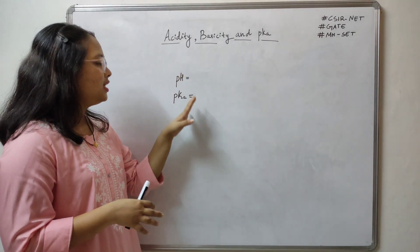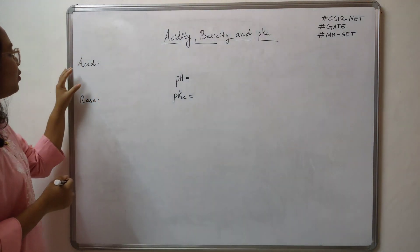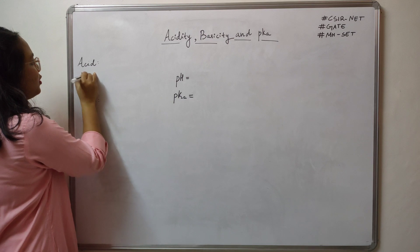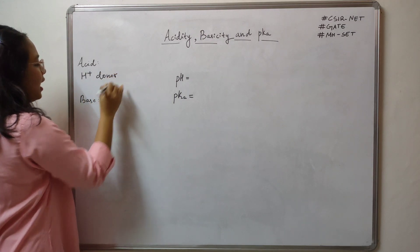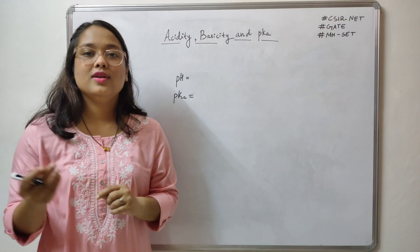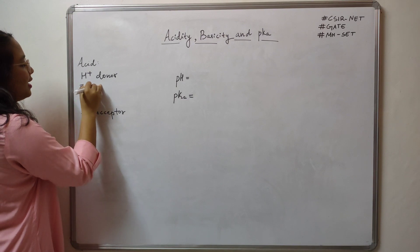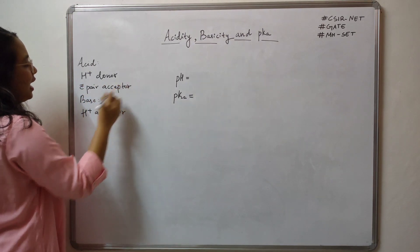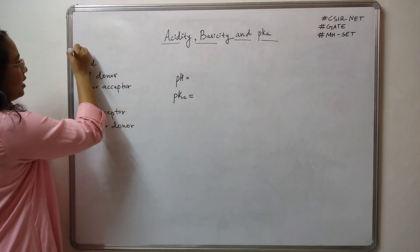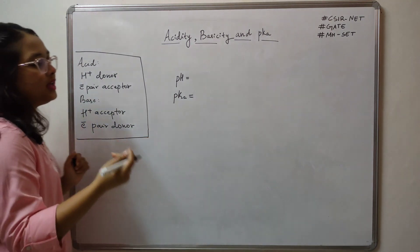Before we jump into pH and pKa, let us do a quick revision of the definitions of acids and bases. If we define acid and base in terms of protons, an acid is a proton donor and a base is a proton acceptor. If we define them in terms of electron pairs, acids are electron pair acceptors and bases are electron pair donors. This basic understanding is required in order to understand pKa, ka, and pH.